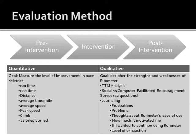Qualitative data was gathered to decipher the strengths and weaknesses of Run Meter. Using a 42-question survey, my study sought to look at how social sources of encouragement compared to computer-facilitated encouragement. The survey enabled me to analyze which aspects of encouragement Run Meter lacked, and also allowed me to find ways to improve the application. I also maintained a journal in order to analyze usability issues and other issues with the interface. The journal recorded my frustrations, problems, thoughts about Run Meter's ease of use, how much it motivated me, if I wanted to continue using Run Meter, and my level of exhaustion. I also used TTM analysis to determine if Run Meter was able to advance my level of commitment to exercise.